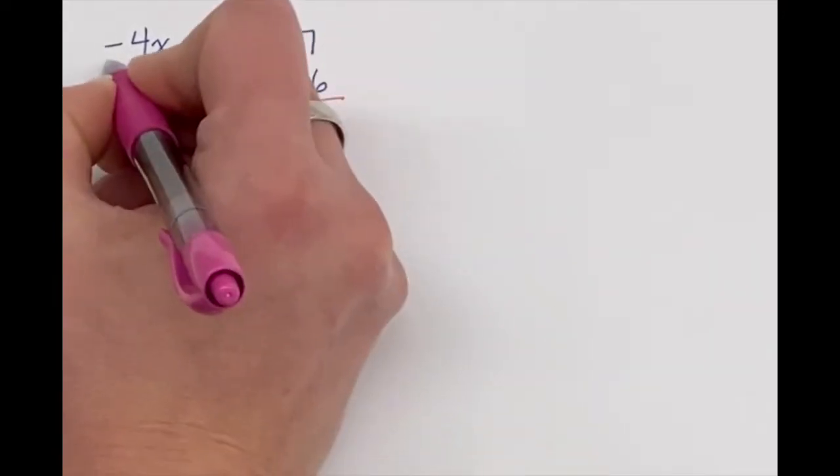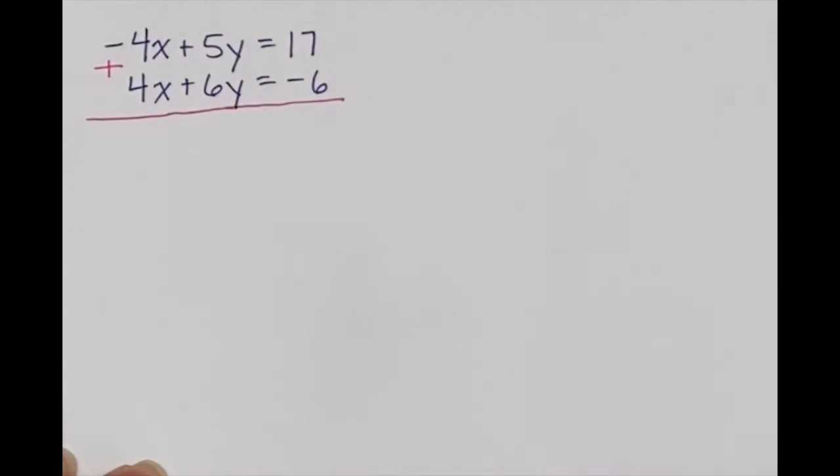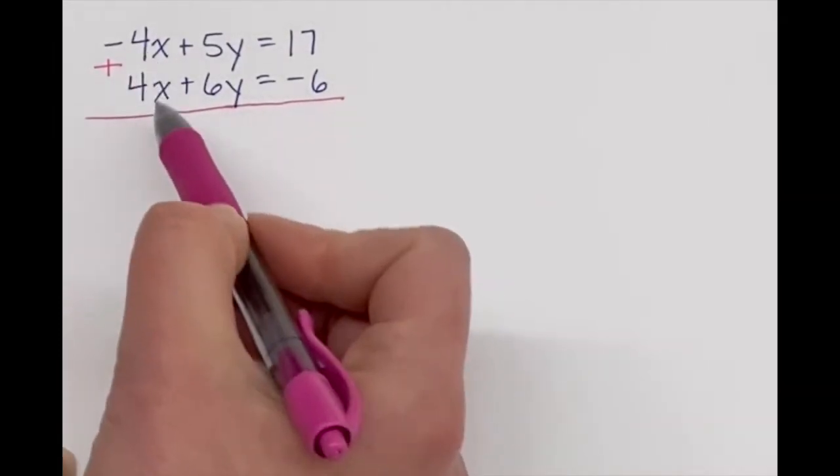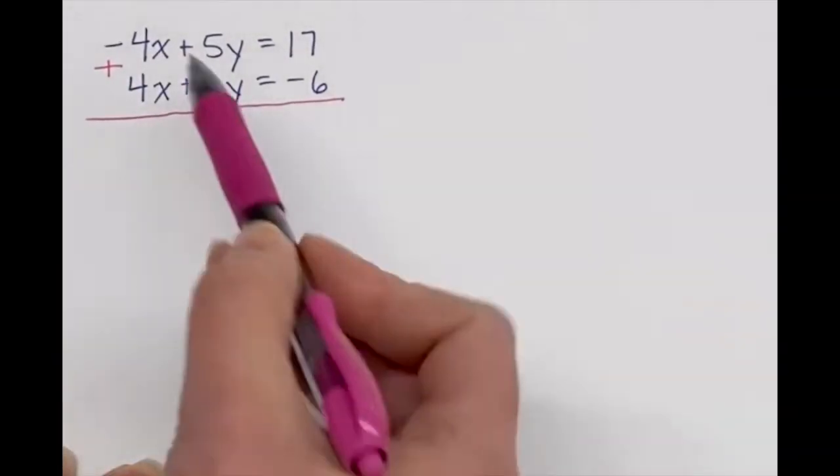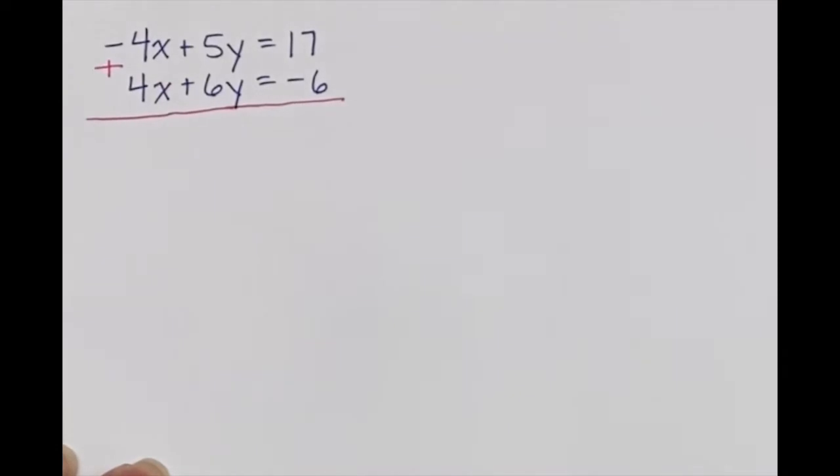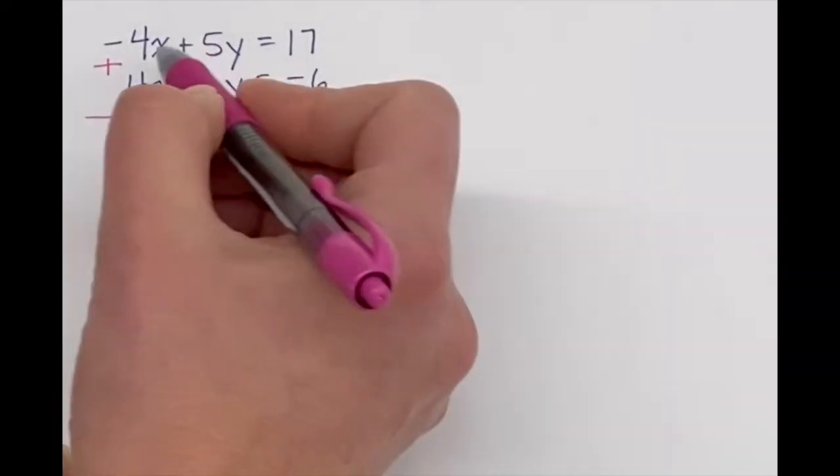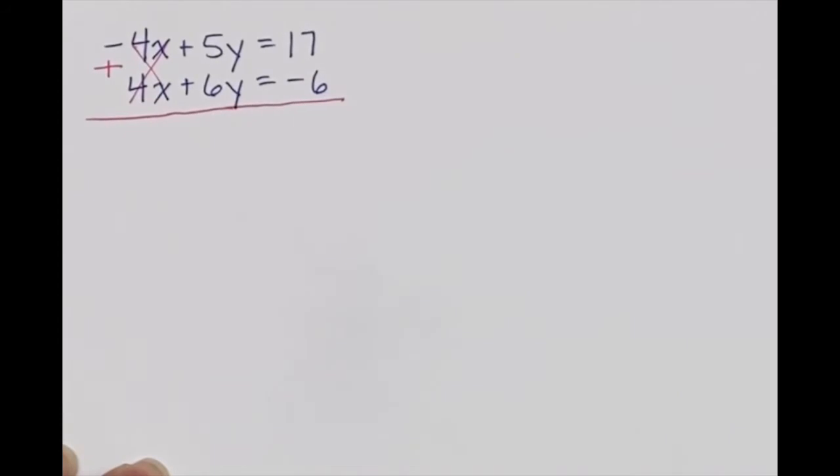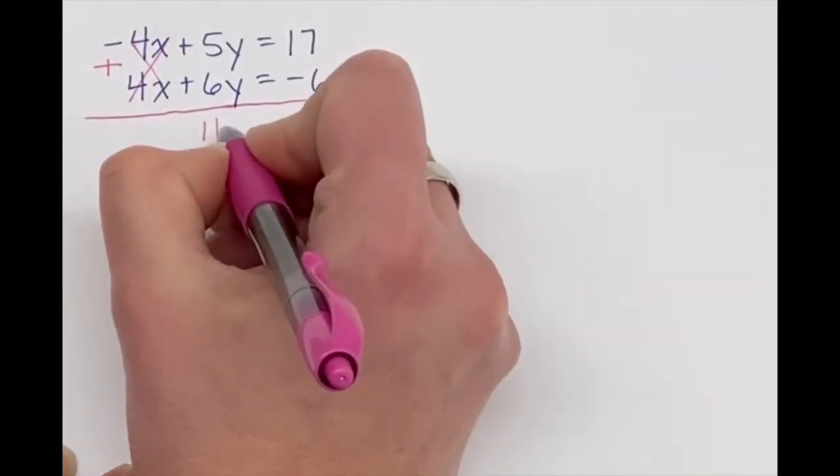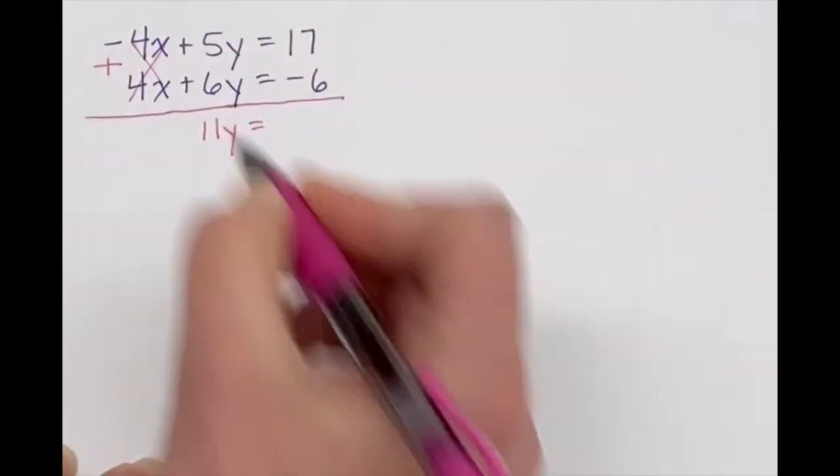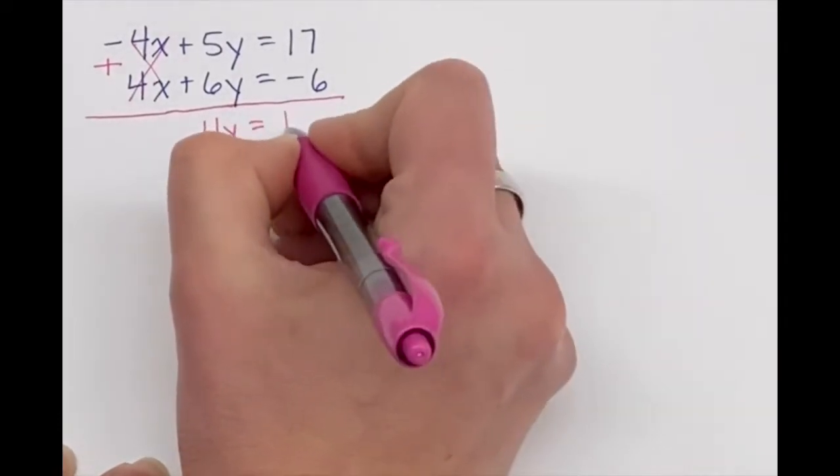So in this case, if I just add these two equations together, the x values disappear because negative 4x plus 4x is 0. So those are now gone. 5y plus 6y is 11y, and 17 plus a negative 6 is 11.